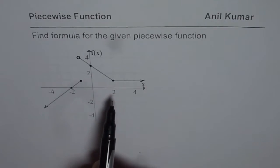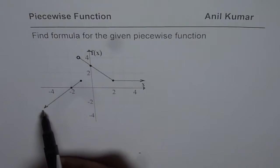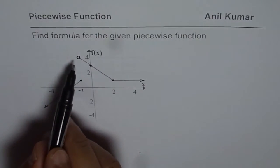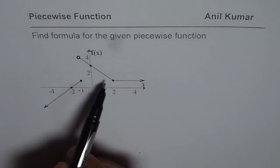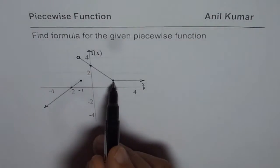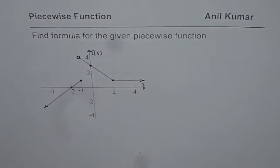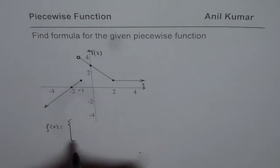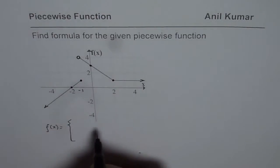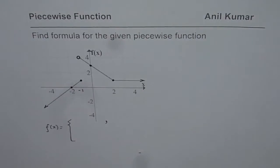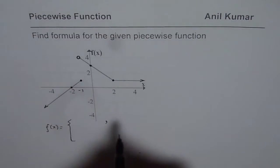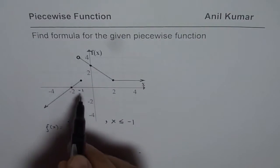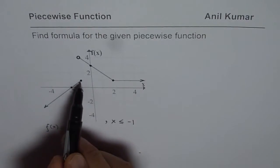Here we have a piecewise function. Starting from the left side we have a straight line which is rising, then at minus one another function starts which is again a straight line with a negative slope. Then at two there is a third function which is a horizontal line. So this function f of x is made up of three pieces. The first piece covers all values of x less than or equal to minus one, since that point is filled in.